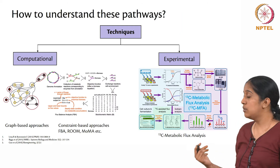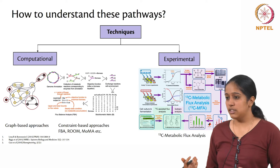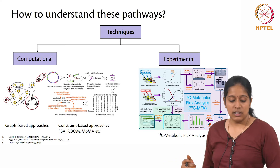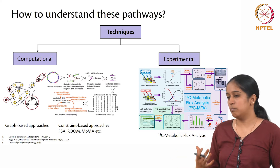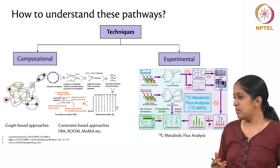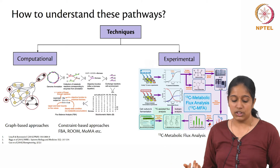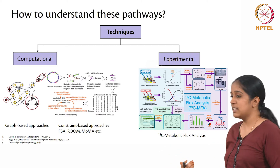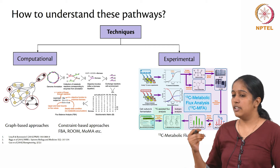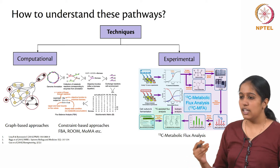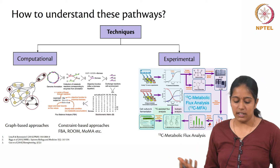There are two broadly classified techniques to understand these pathways. The first one is computational and the second one is experimental. In computational approaches, you might have already seen graph-based approaches where you take the metabolic network and try to find out different routes of conversion, and also constraint-based approaches such as flux balance analysis, ROOM, and MOMA, where you try to identify the fluxes through different reactions and see how they can be optimized for increasing growth or production of a particular metabolite.